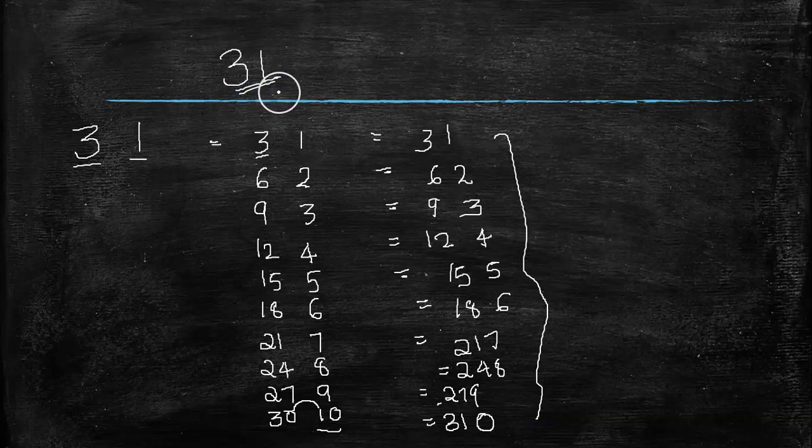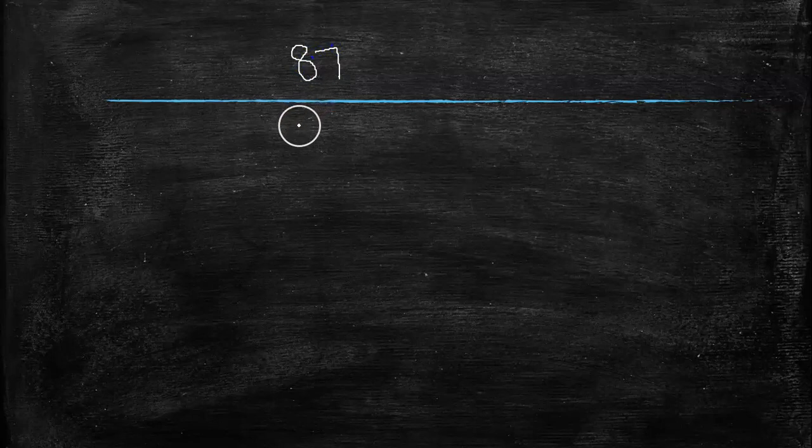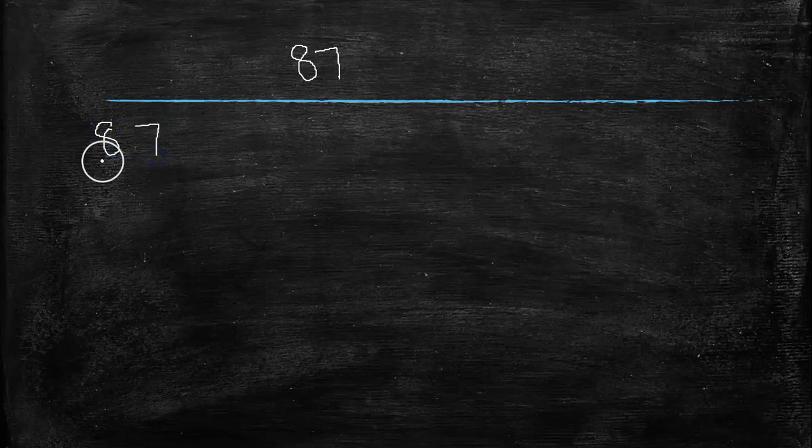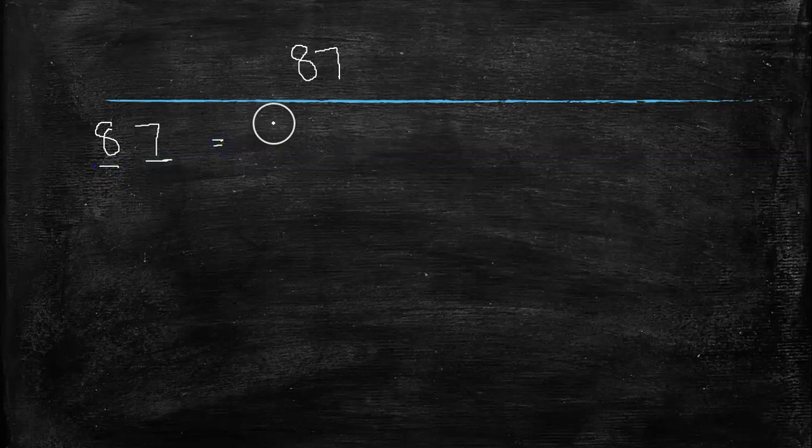So next we can go to a bigger one, that is 87. We can write the table of 87 within seconds. For that, follow my pattern. That is, divide into two parts. First, you write 8 times table: 1 times 8 is 8.